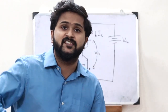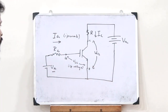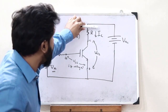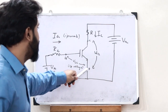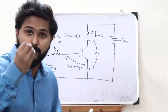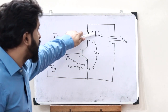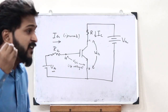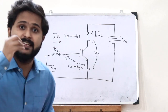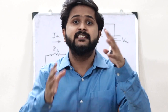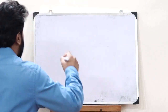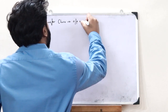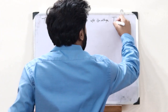Now let us plot the transfer characteristics and the output characteristics — also called steady-state characteristics — of this IGBT. The transfer characteristics is plotted between the output current IC and the input voltage VGE. The steady-state or output characteristics is plotted between the output voltage VCE and the output current IC, keeping the input voltage VGE constant. Let us first plot the transfer characteristics.